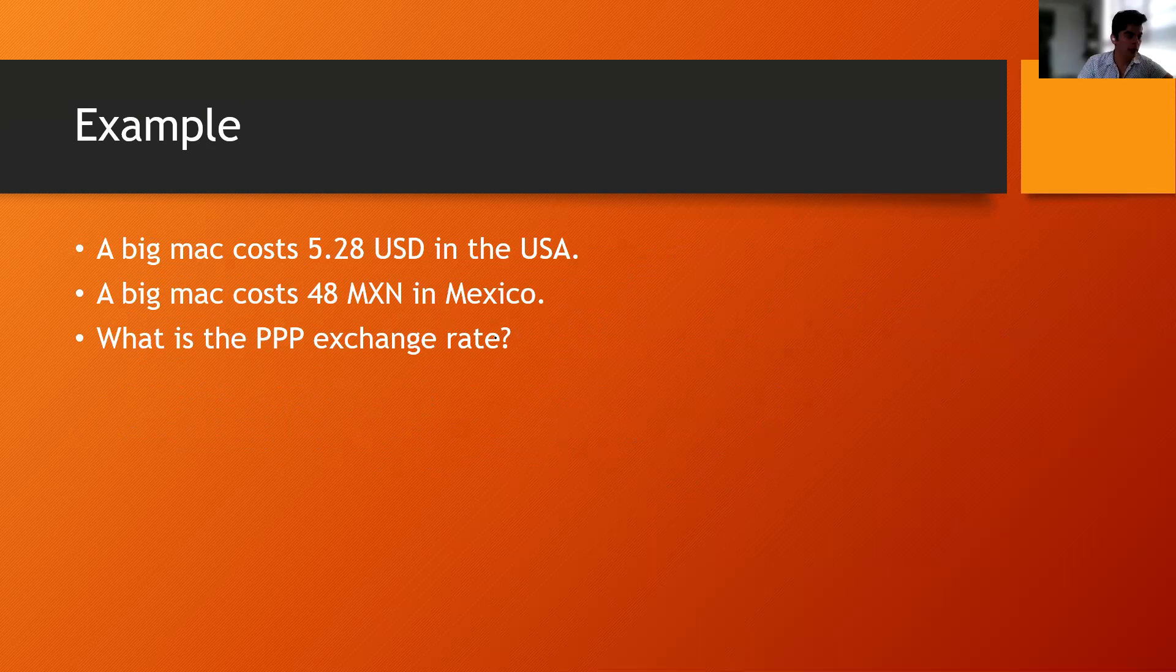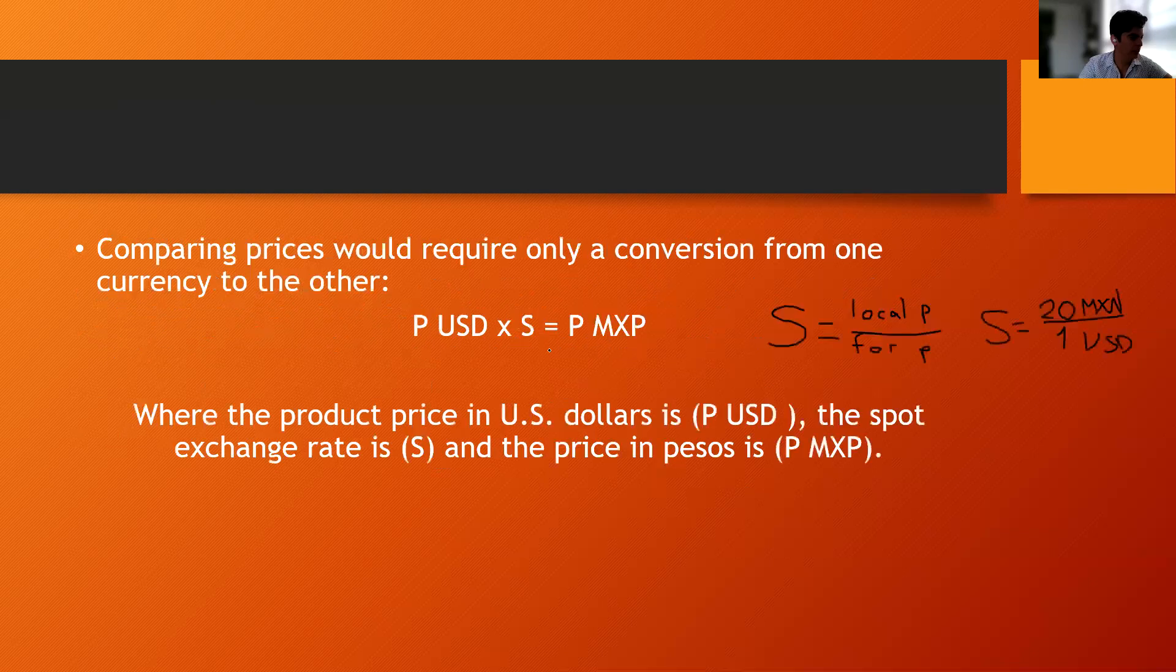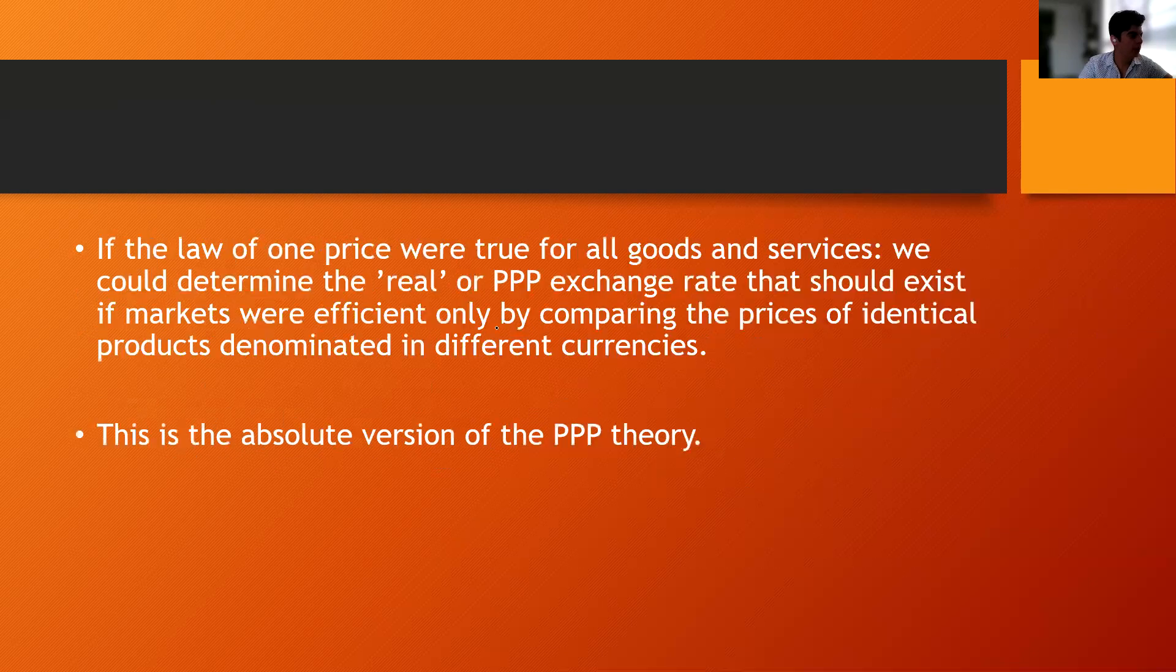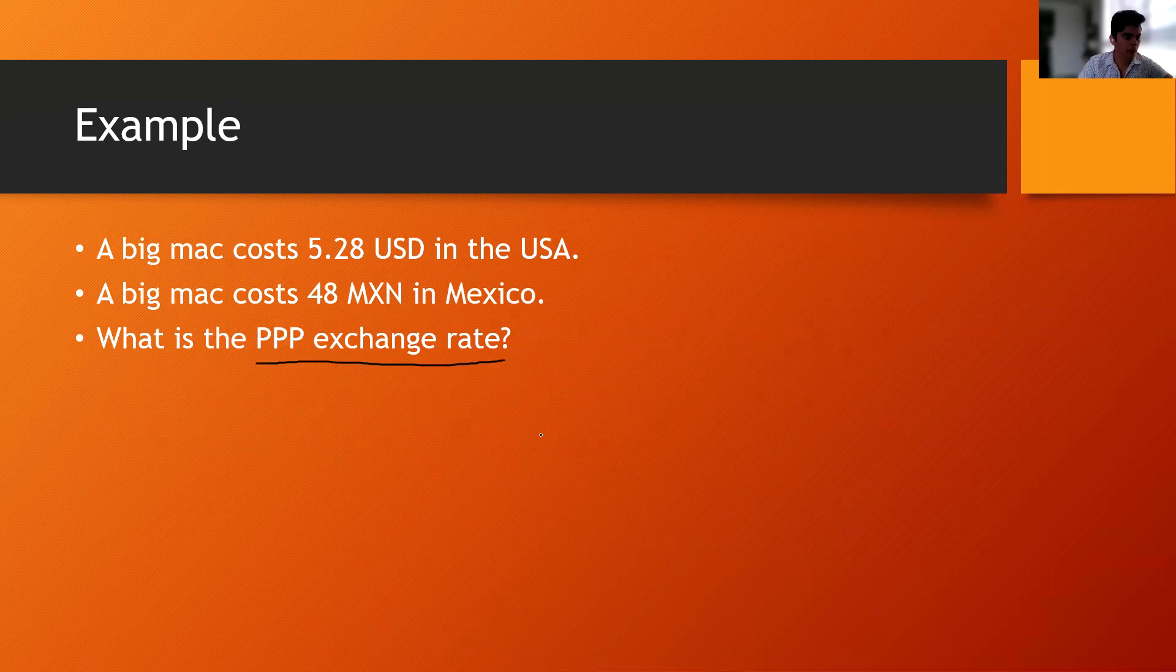In the Big Mac index, what you try to calculate is what would be the exchange rate according to this theory if we can predict that price only using the prices of a Big Mac. And what you are going to calculate is the PPP exchange rate. So let me write, it's the same formula that I have here, this one, or it's also the same as this one, the spot.